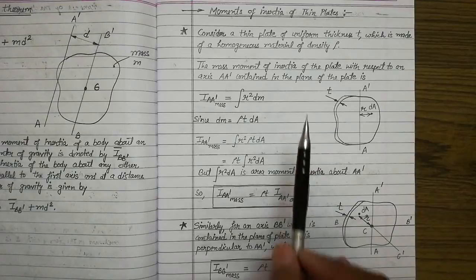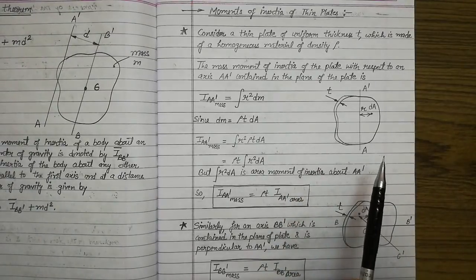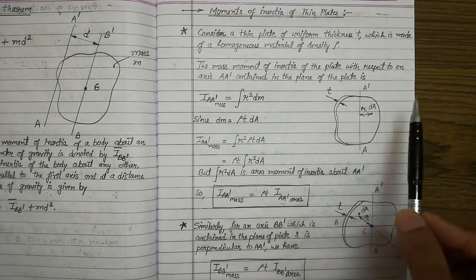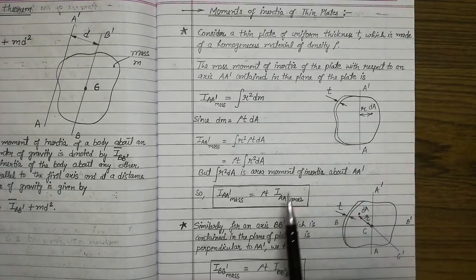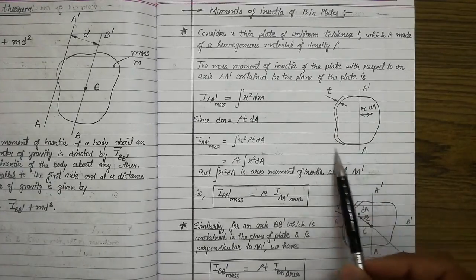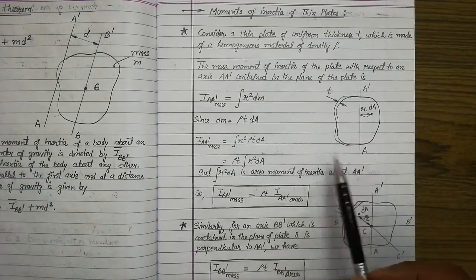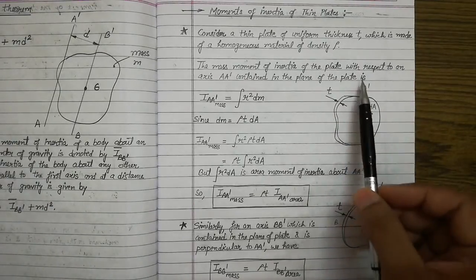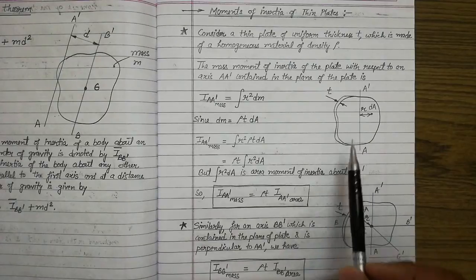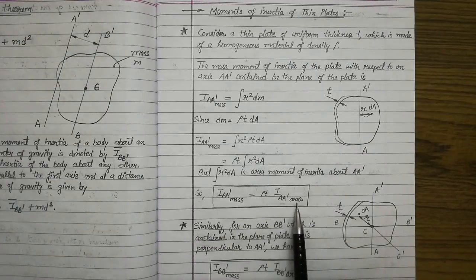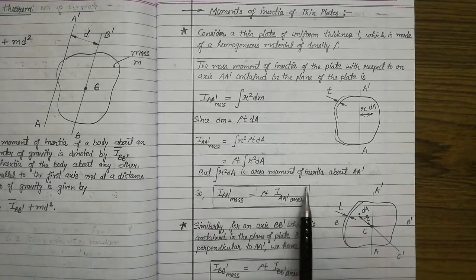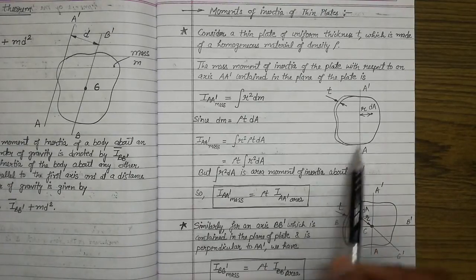To summarize the key conclusion: if you have any thin plate and you know the area moment of inertia of that plate about any particular axis, and you want to find its mass moment of inertia about the same axis, it is very simple — just multiply the area moment of inertia about that axis by rho times t, and you get the mass moment of inertia of that plate about that axis.